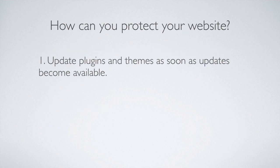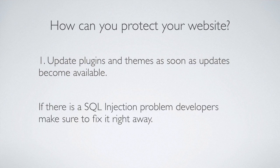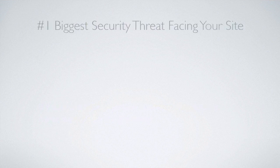So, what do we do? The number one thing to do is update your plugins, themes, and your WordPress core files as soon as updates become available. I know it can be a pain, but this is a very real threat and it's easy to avoid by making those updates. Usually, if there is an SQL injection problem that's discovered, developers fix it right away, and updates can come hot and heavy when these SQL injection vulnerabilities are found. So, update your themes and files whenever updates become available.